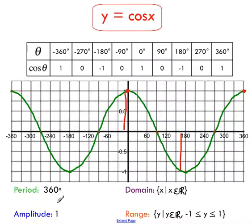So we say our amplitude is one. Domain and range are the same here. You can substitute any x value in, any x value goes into this function. You just can't get y values outside that range of one and negative one.